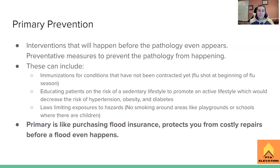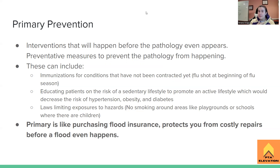Primary prevention involves interventions that happen before the pathology even appears. If there's already an active pathology, the intervention cannot be primary prevention. These are preventative measures that keep it from happening at all. For example, for lung cancer, primary prevention is simply: don't smoke. This can also include immunizations for conditions not yet contracted — like getting your flu shot at the start of flu season so you hopefully don't get the flu, or if you do, it won't be as bad.